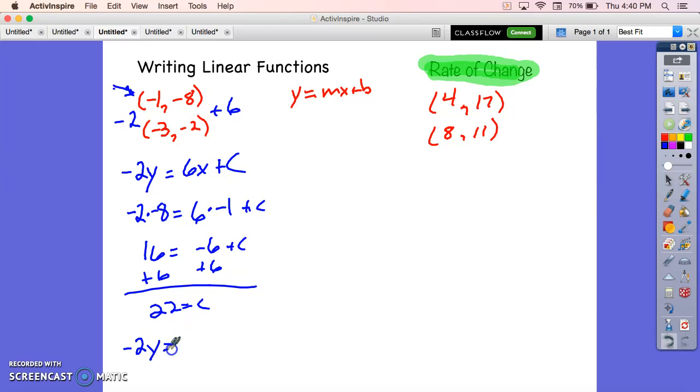Plug him back in, negative 2y equals 6x plus 22, divide everything by negative 2 to get it in a slope intercept form, negative 3x minus 11, and there you go. You have the form that you want.